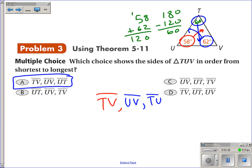So the answer would be A, and that's how you find the side lengths in order from shortest to longest and how to use theorems 5-10 and 5-11.